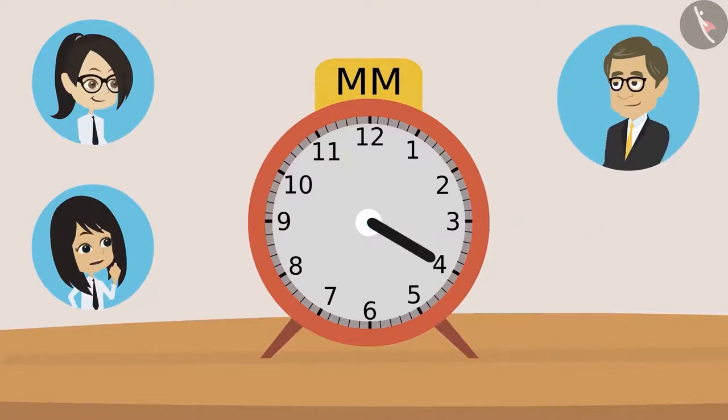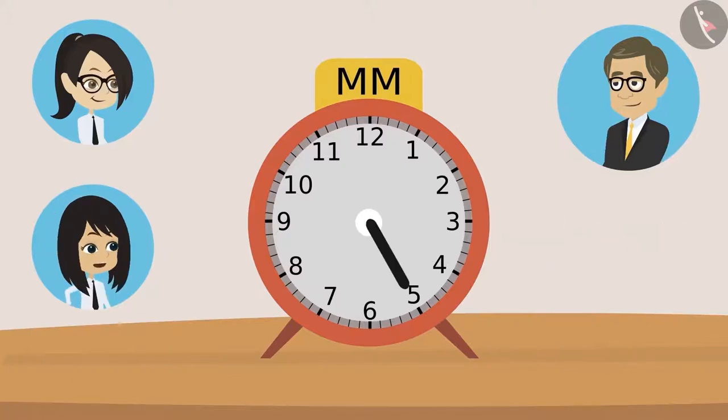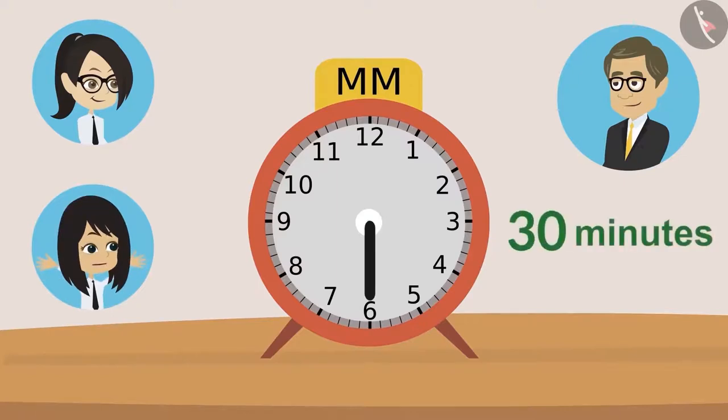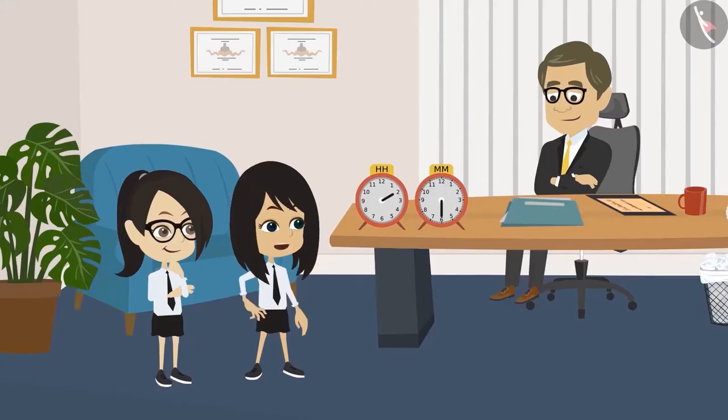When the hand is on four, twenty minutes. When the hand is at five, twenty-five minutes. And when the hand is on six, it will be thirty minutes. Sir, as per this clock, thirty minutes have passed.